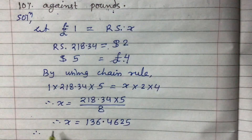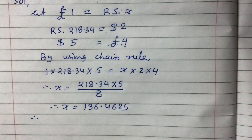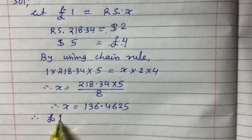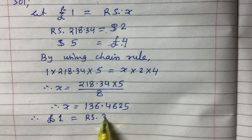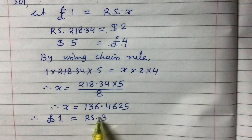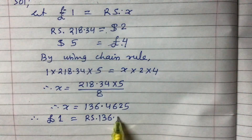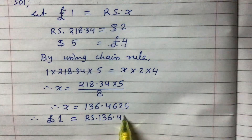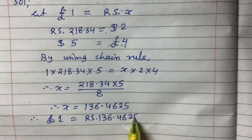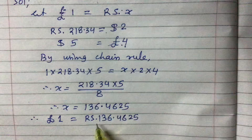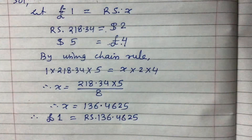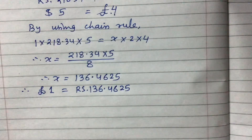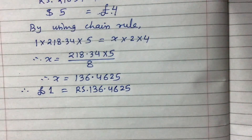Using a calculator, we get x equals 136.4625. Therefore, pound 1 equals rupees 136.4625. This is the rate before devaluation — before devaluation of Nepalese currency, we can exchange 1 pound with rupees 136.46 paisa.